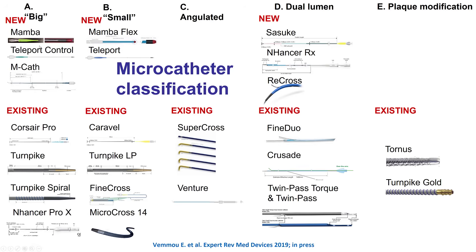There are currently many different microcatheters: big ones, smaller ones, angulated ones for going into the collateral at the beginning of the case, dual lumen, and plaque modification. For purposes of collateral crossing, we're talking about the big and the small microcatheters. The advantage of the bigger ones is the ability to torque them — the rapid spinning technique to facilitate advancement. The advantage of the smaller ones is the lower profile that may facilitate advancement, especially through small epicardial collaterals.